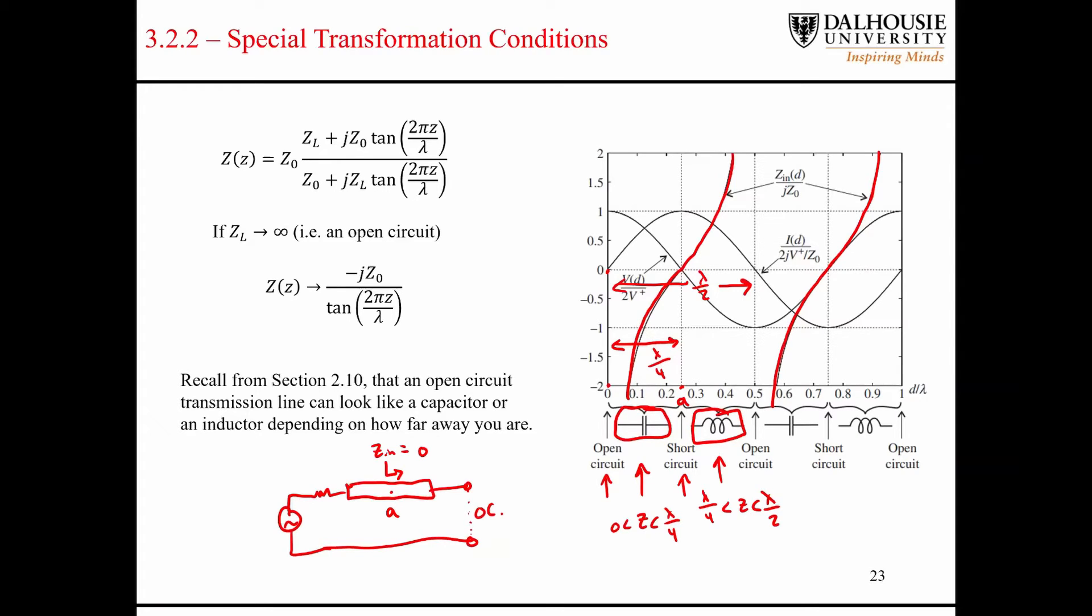So that suggests that we can make use of these types of transformations, and we can create transmission lines that look like capacitors and inductors and make use of that in our matching networks.